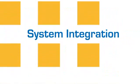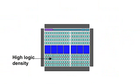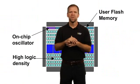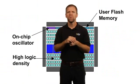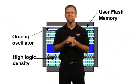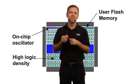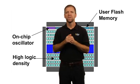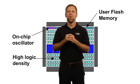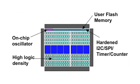Mach XO2 devices provide abundant lookup tables, embedded memory, built-in PLLs, and an on-chip oscillator. In addition, Mach XO2 devices offer up to 256 kbits of general-purpose flash memory that supports up to 100,000 write cycles and is accessible via the JTAG, I2C, and SPI interfaces, or the onboard wishbone bus. Popular functions for system and consumer applications can be implemented on all devices without using lookup tables. These functions include I2C, SPI, and timer counters.